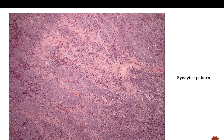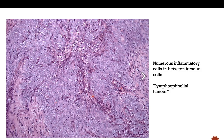Syncytial pattern means all the tumor cells clump together and you cannot see significant cytoplasm in between. If you look under the microscope it appears bluish because the cytoplasm is minimal — clumped together and bluish. Characteristically it also has intervening areas rich in lymphocytes.